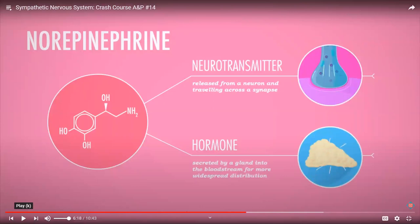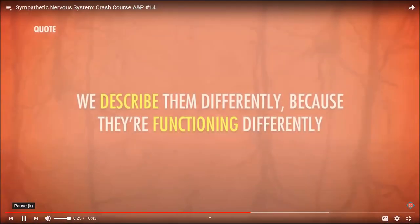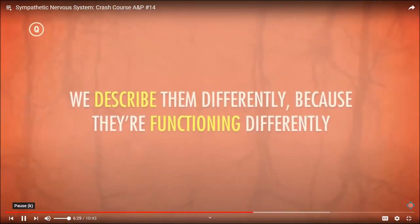This is a super important thing to remember. Between the rest of this semester and next semester, we'll be talking about how hormones and neurotransmitters work together. Norepinephrine is the exact same molecular structure whether it's a neurotransmitter or a hormone — it just depends on how it's released. Released from a neuron across a synapse: neurotransmitter. Secreted from a gland directly into the bloodstream for widespread distribution: hormone. To an effector, hormonal norepinephrine is just as effective as neurotransmitter norepinephrine.